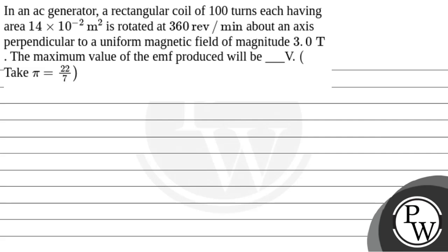Hello, let's read out the question. In an AC generator, a rectangular coil of 100 turns, each having area 14 into 10 to the power minus 2 meter square, is rotated at 360 revolutions per minute about an axis perpendicular to a magnetic field of magnitude 3.0 Tesla. The maximum value of EMF produced will be ___ volt. Take value of π as 22 by 7.